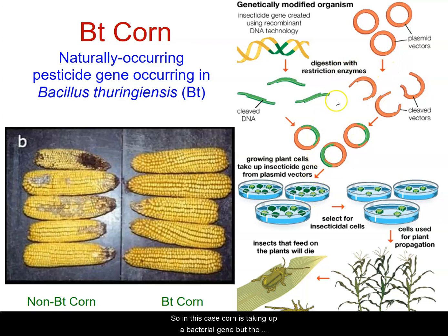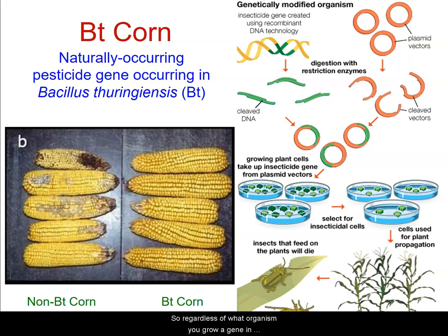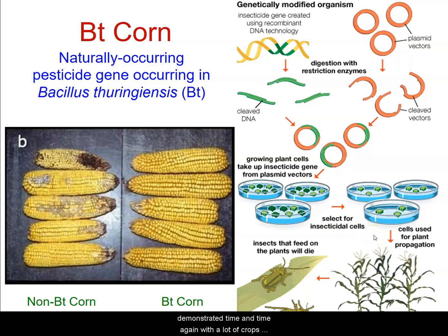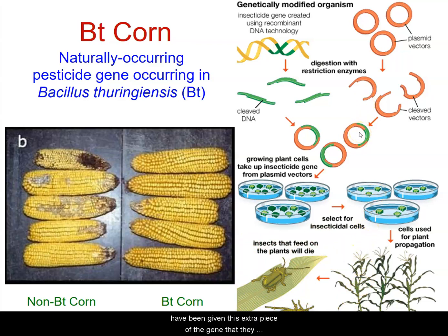In this case, corn is taking up a bacterial gene, but the gene can be read by the ribosomes inside of the corn because the genetic code is universal. Regardless of what organism you grow a gene in, the ribosomes should be able to translate it into a functional enzyme. This has been demonstrated time and time again with a lot of crops, especially Bt corn, which can survive attacks by many different types of insects because they have been given this extra piece of gene that they can translate into a naturally produced pesticide enzyme.